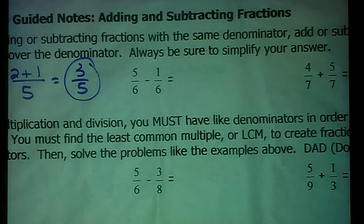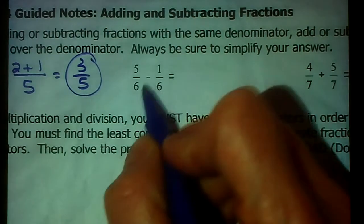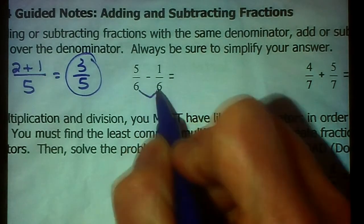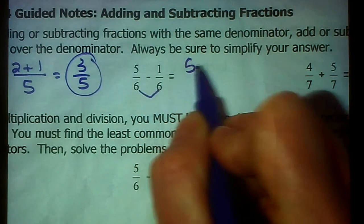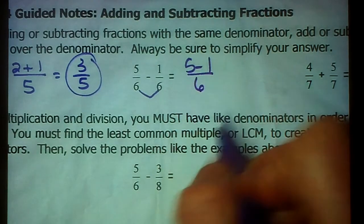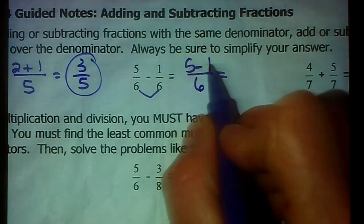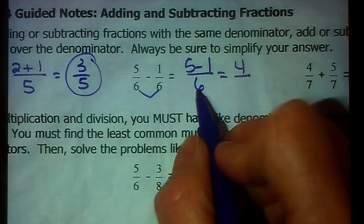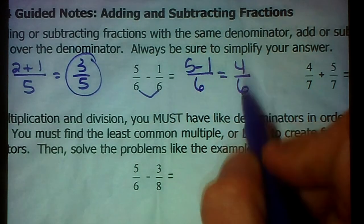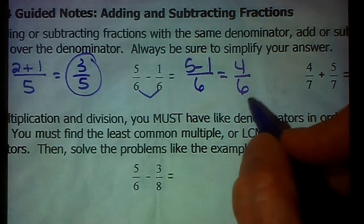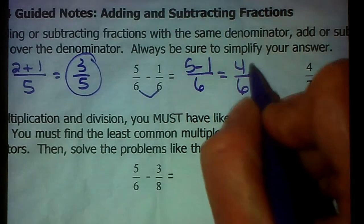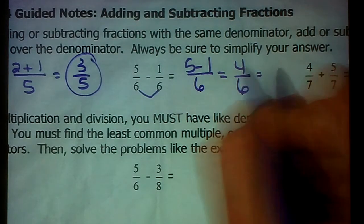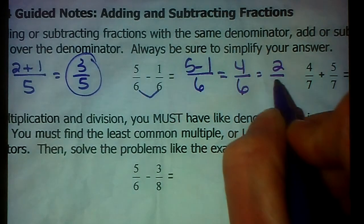Alright, so 3/5, nothing goes into 3 or 5 except for 1, so we're good. The next one, 5/6 minus 1/6. Again, when you subtract, denominators need to be the same. These are, so I'm going to subtract my numerators only and bring over the denominator. 5 minus 1 is 4, and bring over the 6. And with 4 and 6, 2 is their GCF. It's the largest number that divides into each. 4 divided by 2 is 2. 6 divided by 2 is 3.